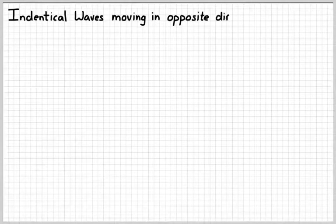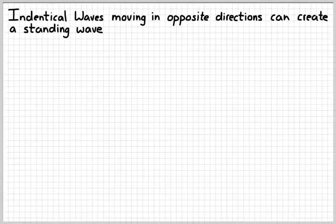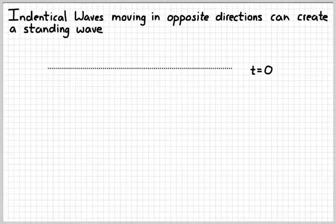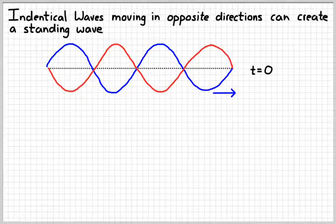In order to have standing waves we need to have identical waves moving in opposite directions. With a guitar string, you pluck the string, the waves are identical, they reflect off the opposite ends, and so they're moving in opposite directions. If we sketch what those two waves might look like at time t equals zero, we may have one wave traveling to the right and a second wave traveling to the left — identical waves moving in opposite directions.